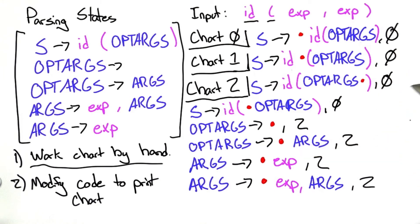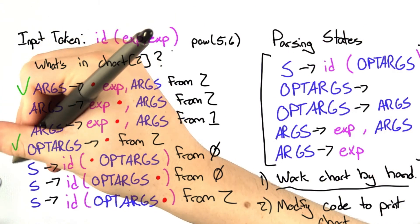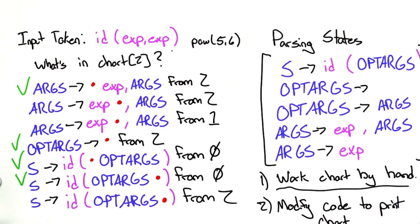Now we have everything we need to answer the question. We're just going to check off the choices that were in our chart state 2.